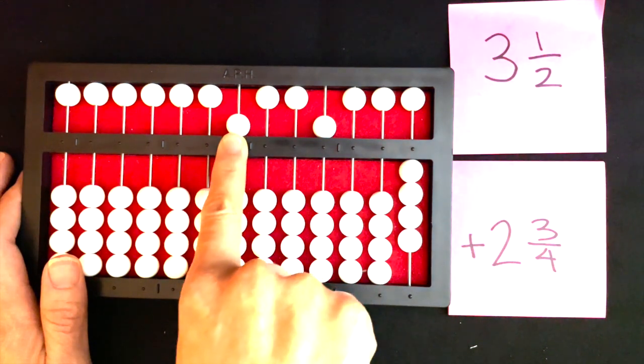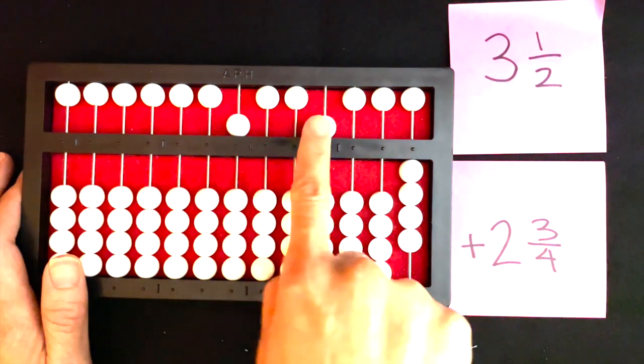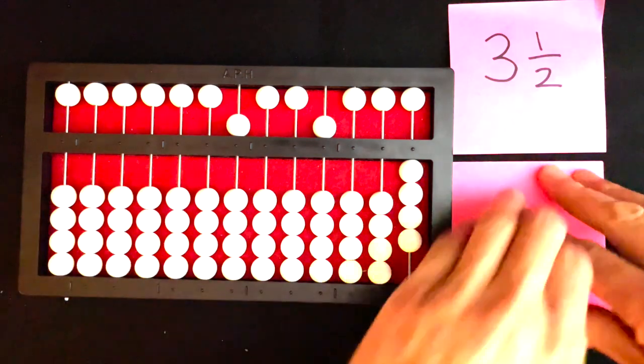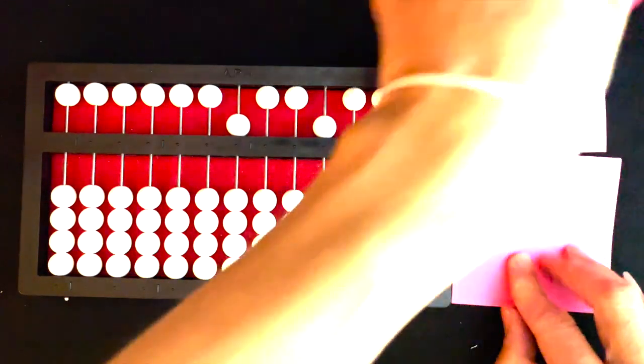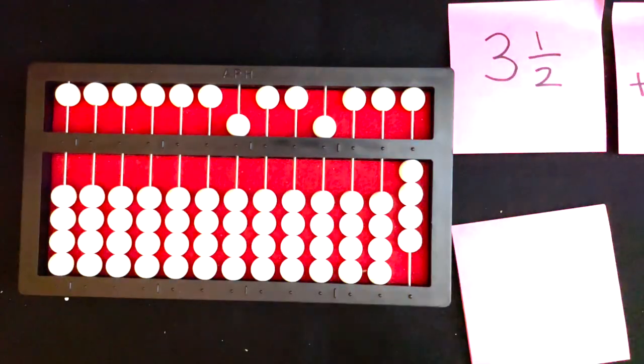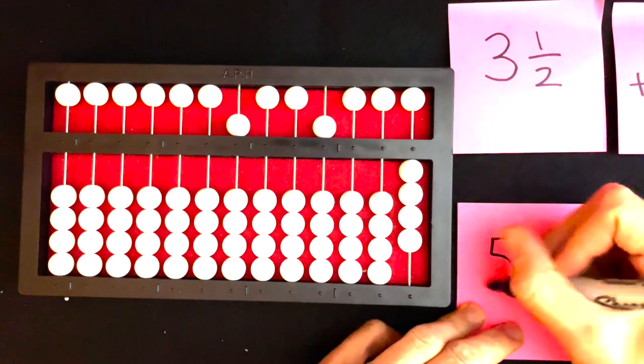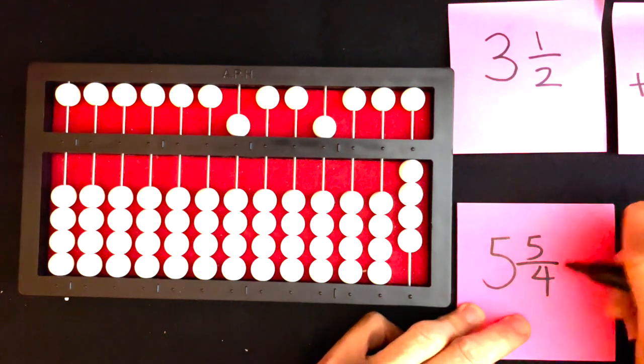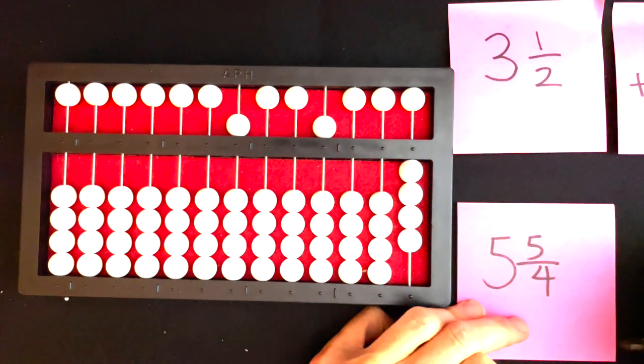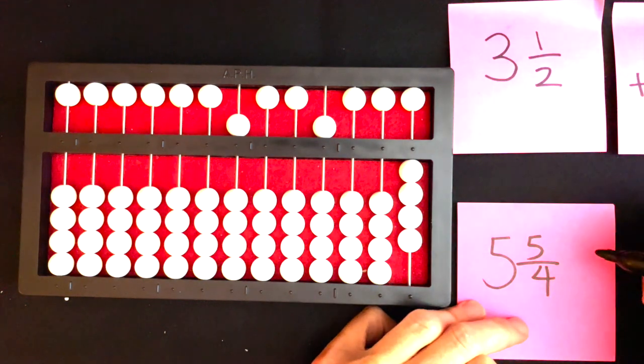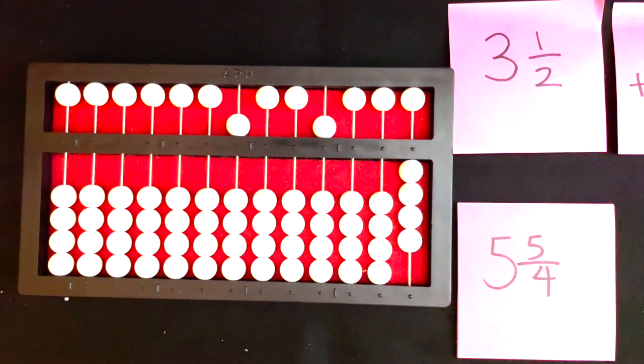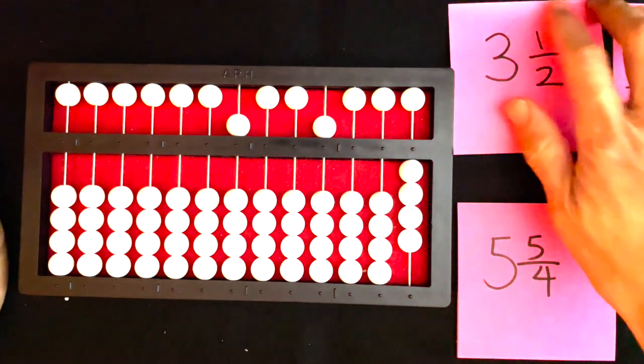I have my answer as five and five-fourths. Let's think about that. Five-fourths is an improper fraction, so I need to figure out how to change that so it can be correctly formatted for my answer.